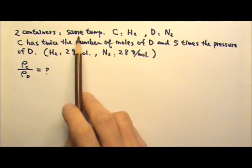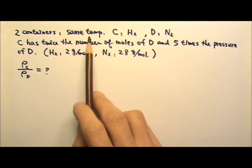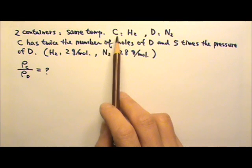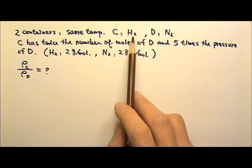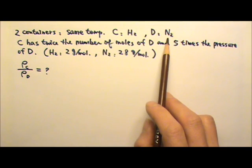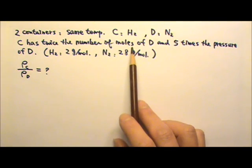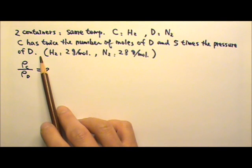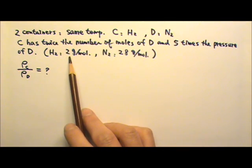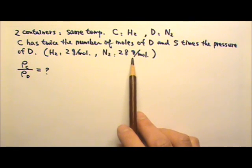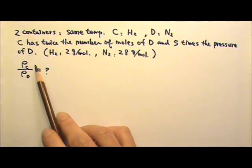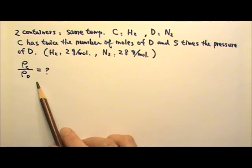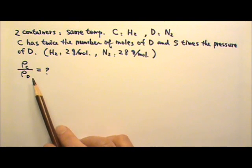Two ideal gases at the same temperature are held in two containers C and D. C holds hydrogen gas and D holds nitrogen gas. C has twice the number of moles of D and 5 times the pressure of D. The molar mass of hydrogen is 2 g per mole while that of nitrogen is 28 g per mole. Find the ratio of the densities, rho_C over rho_D.